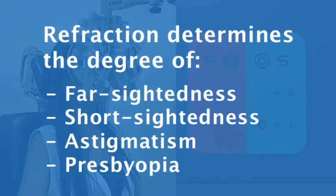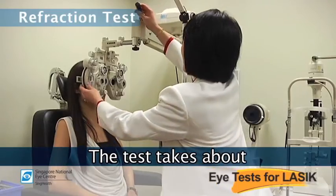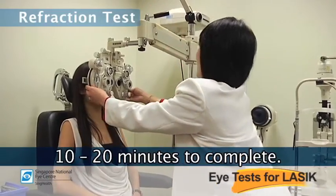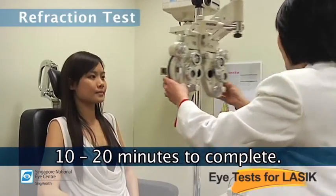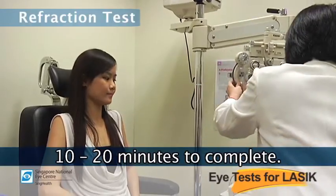Refraction determines the degree of farsightedness, short-sightedness, astigmatism and presbyopia. The test takes about 10 to 20 minutes to complete.